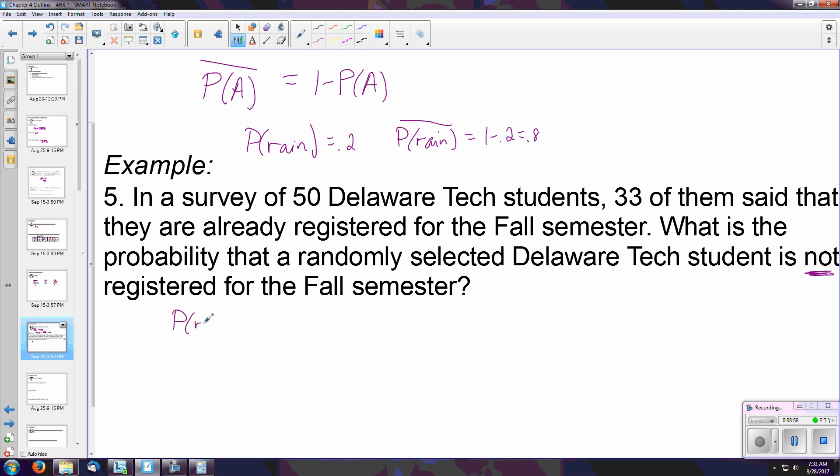If we know the probability that they are registered is 33 out of 50, the complement of that, so the probability that they are not registered, which you could also just write as not registered instead of using the overline, is equal to 1 minus 33 over 50.